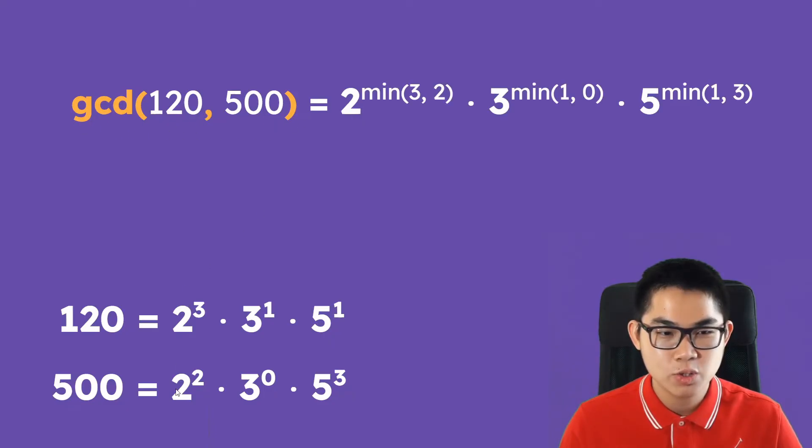So the GCD is equal to 2 to the power of min of 3 and 2. So where did this come from? So we have the exponent 3 and 2 and just put it inside a function called min and I'll show you how to calculate this, it's very easy. Now the same thing over here, we have a 3 and then we have the exponents 1 and 0, so put it inside the function min of 1 and 0, and then 5 with min 1 and 3.